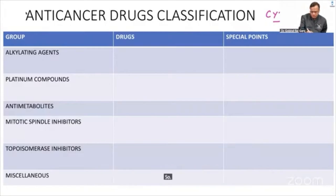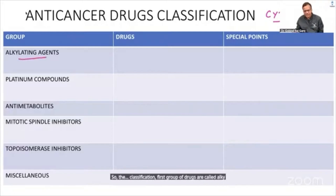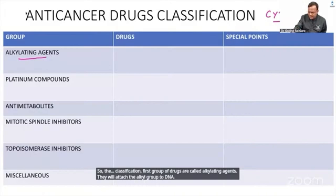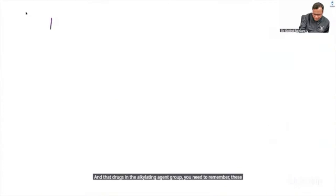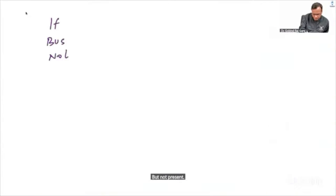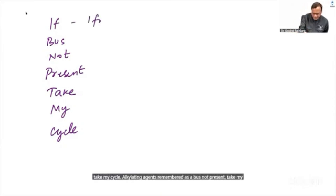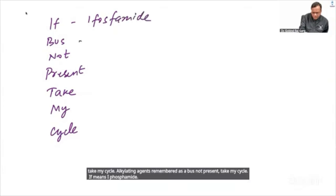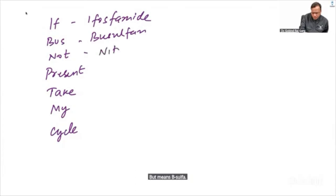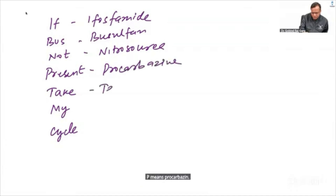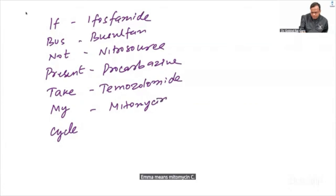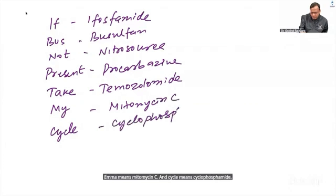The first group of drugs are called alkylating agents, which attach an alkyl group to DNA. To remember the drugs in this group, use the mnemonic: 'If bus not present, take my cycle.' F = Ifosfamide, Bus = Busulfan, Not = Nitrosoureas, P = Procarbazine, T = Temozolomide, M = Mitomycin C, Cycle = Cyclophosphamide.